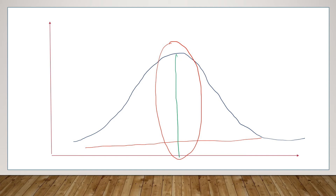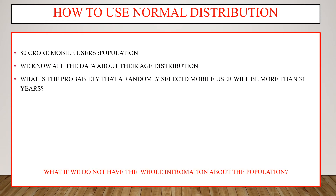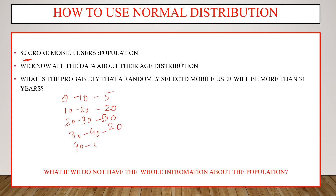Now let us take an example of how to use normal distributions to predict the probability of any future value. We will only use the frequency concept of probability discussed in module 2. Our whole population is about 80 crore mobile users, and we know all the data about their age distribution: 0 to 10 years is 5 crore, 10 to 20 years is 20 crore, 20 to 30 years is 30 crore, 30 to 40 years is 20 crore, and 40 to 50 years is 5 crore.